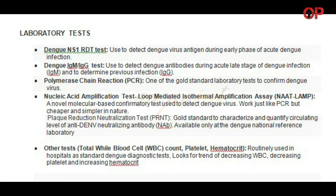The Nucleic Acid Amplification Test, specifically the loop-mediated isothermal amplification assay, is a novel molecular-based confirmatory test used to detect dengue virus. It works just like PCR but is cheaper and simpler in nature. The Plaque Reduction Neutralization Test (PRNT) is the standard to characterize and quantify the circulating level of anti-DENV neutralizing antibody (NAB), and is available only at the Dengue National Reference Laboratory.